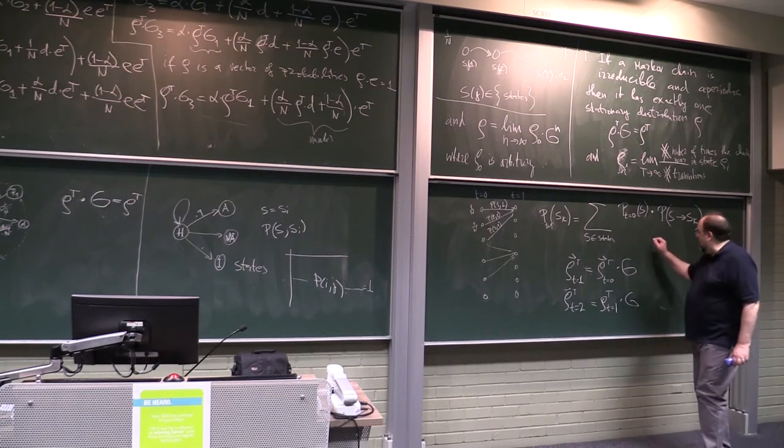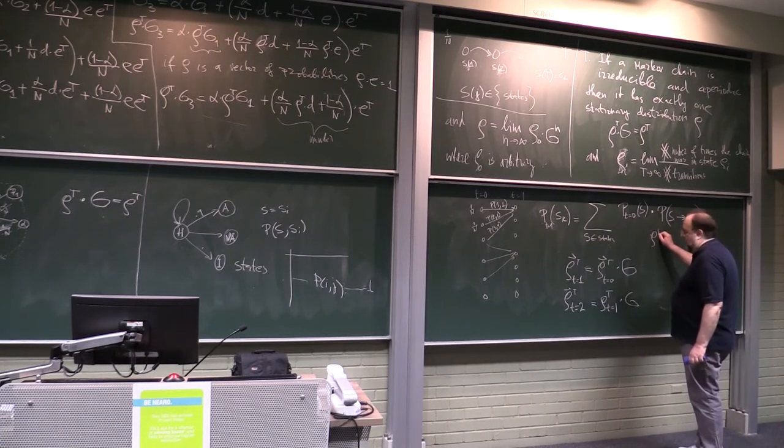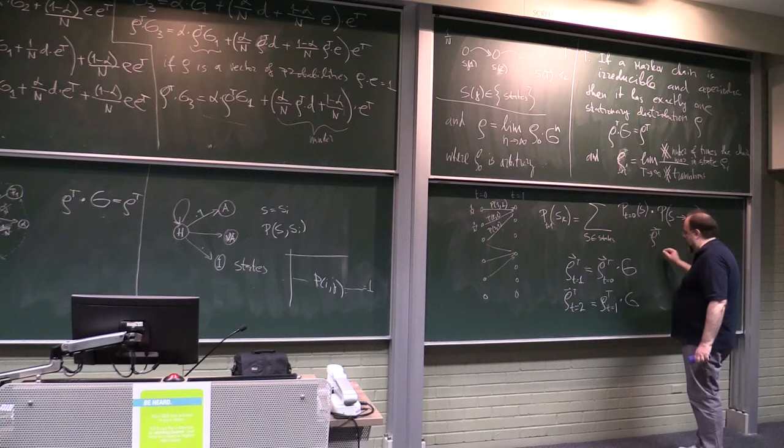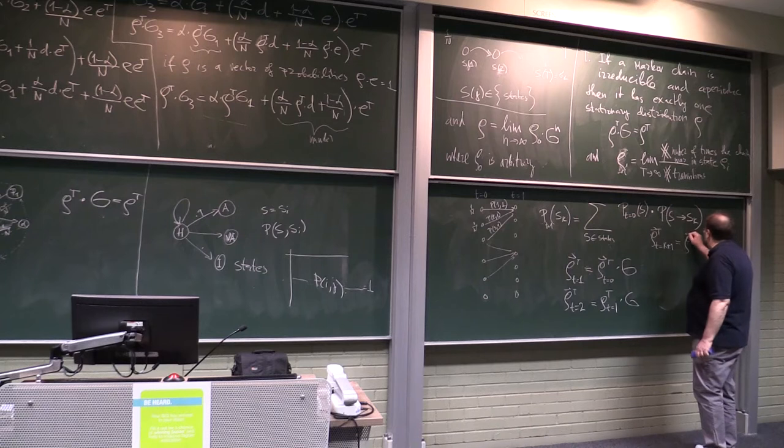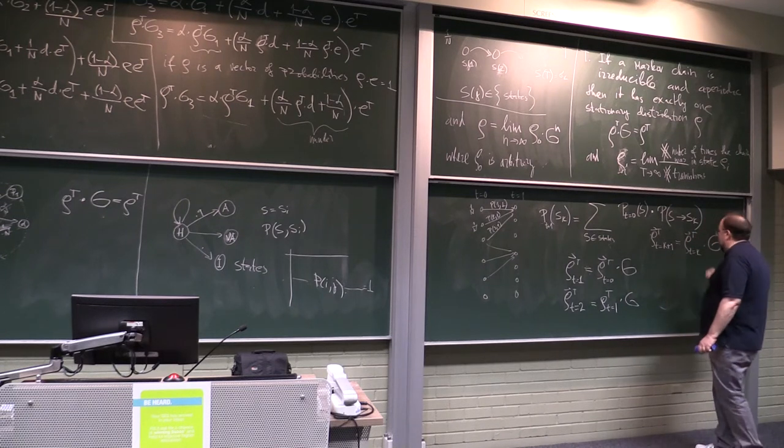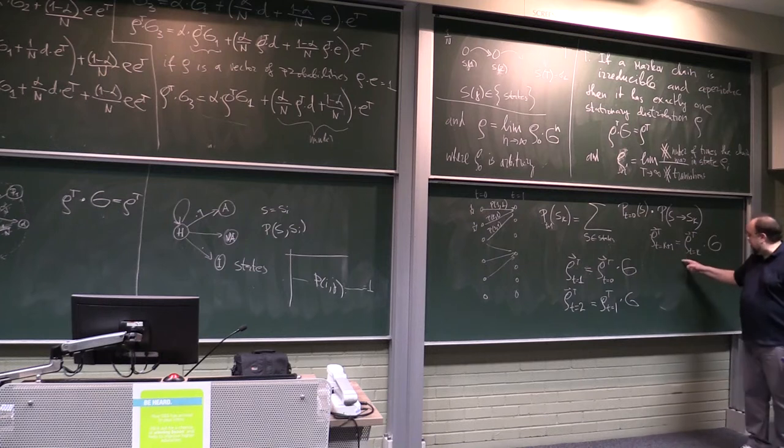And so forth, ρ transpose when t is equal to k plus 1 is simply ρ transpose when t equals to k times g. Do you understand this?